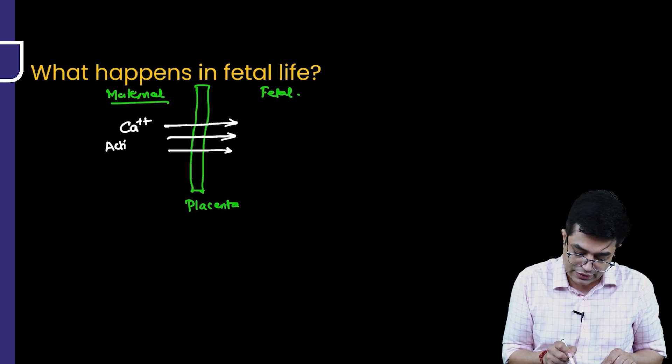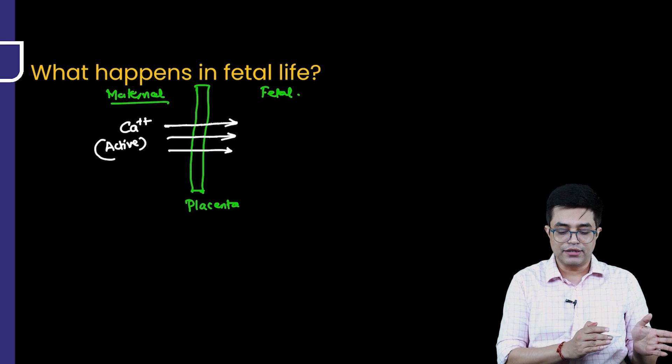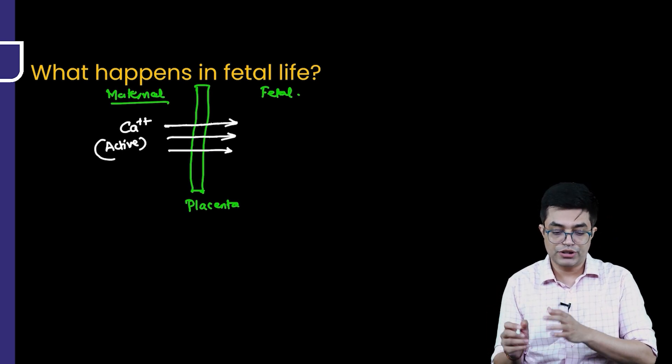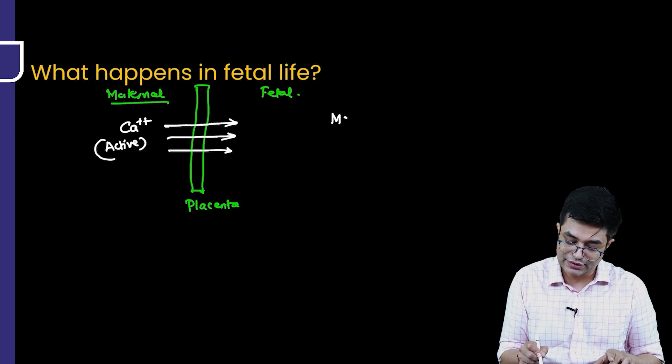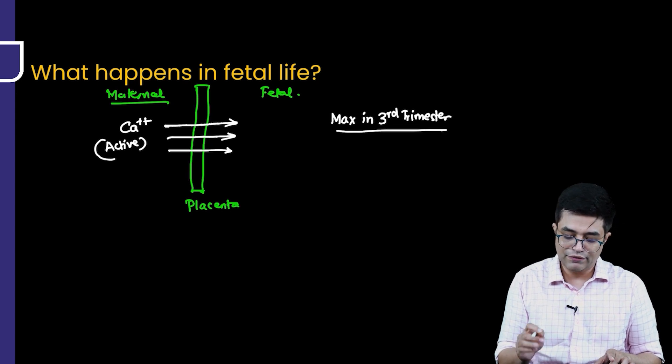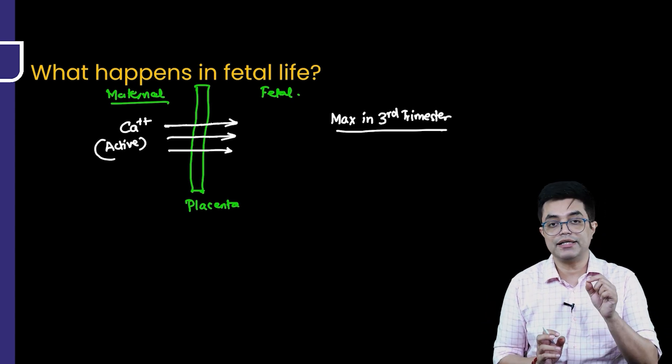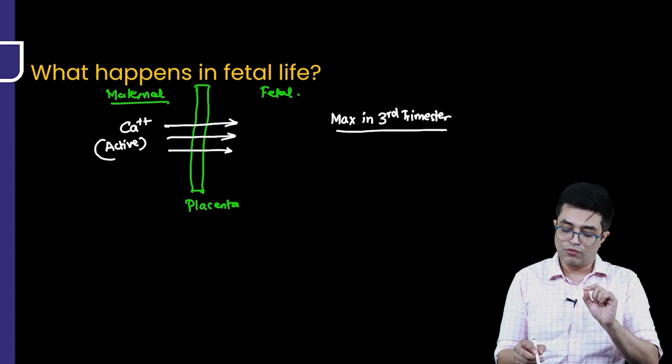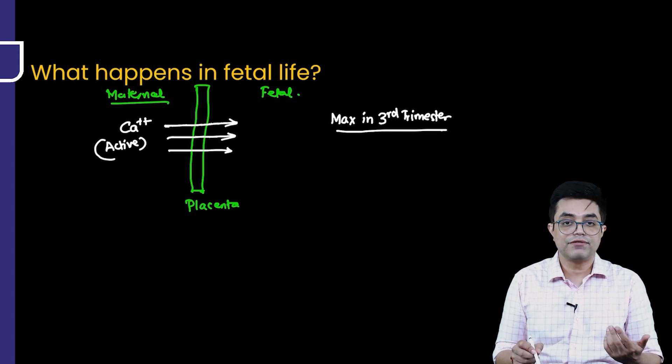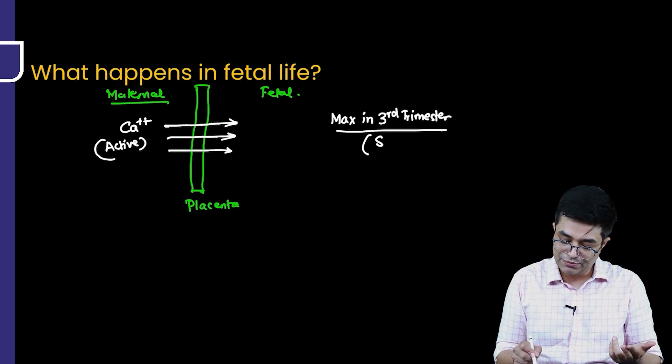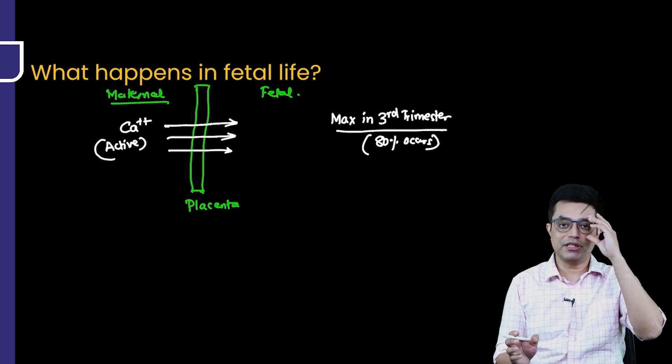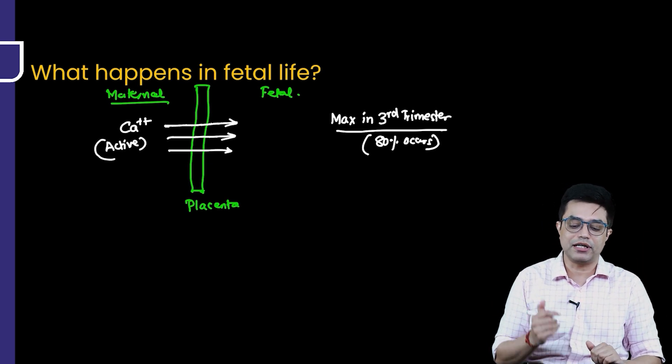Active calcium transport occurs from maternal circulation to the fetal circulation and this transmission is maximally seen in the third trimester. Particularly in the third trimester you find that high levels of calcium are transmitted from the maternal circulation to the fetal circulation and it is an active process. In fact, NNF guidelines say that up to 80% transmission occurs in the third trimester alone, 20% in the first two trimesters and 80% happens in the third trimester.